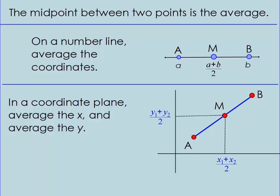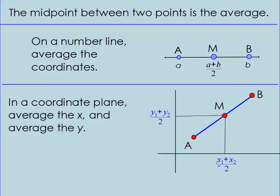The midpoint between two points is the average. This is stuff you might have done before, but we're doing it. Midpoint's the average, so on a number line, if we have point A and point B, we call the midpoint M — it's just the average of A and B, which is A plus B over 2. If we're on a coordinate plane, we just find the average of the x-values and then the average of the y-values. That's how to find the midpoint between two points on a line segment.